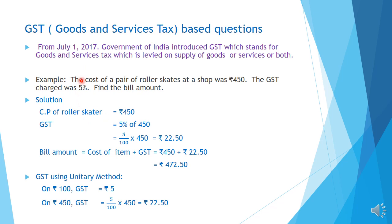Here the cost price is given as Rs. 450. And GST we have to calculate on this amount. It is 5%, so 5% of 450. 5% means 5 by 100, and 'of' means multiply. So 5 by 100 into 450, and on simplification we get Rs. 22.50.